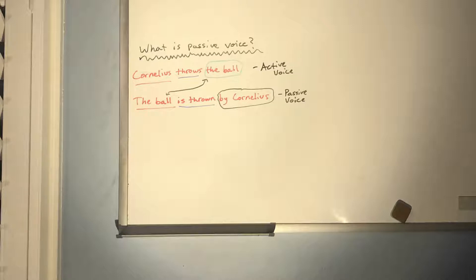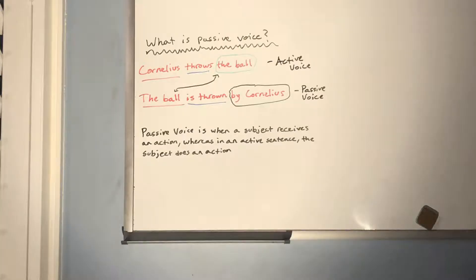However, we can also present this information differently, where the subject is the thing being acted upon by the verb or by someone else. In the second sentence, which is in passive voice, the ball — the subject — is being thrown by someone else within a prepositional phrase. This is what passive voice is: the subject receives the verb as opposed to a direct object receiving it. Formally defined, passive voice is when the subject receives an action, whereas in an active sentence the subject is doing the action.